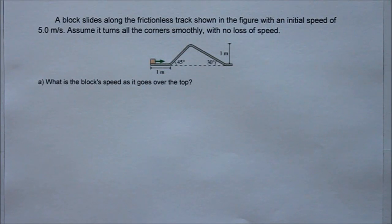Hey guys, today we're going to be doing a practice problem from AP Physics Unit 2 Kinematics in One Direction. The problem reads: a block slides along a frictionless track shown in the figure below with an initial speed of 5 meters per second. Assume it turns all corners smoothly with no loss of speed. And the question that we have to solve is, what is the block speed as it goes over the top?